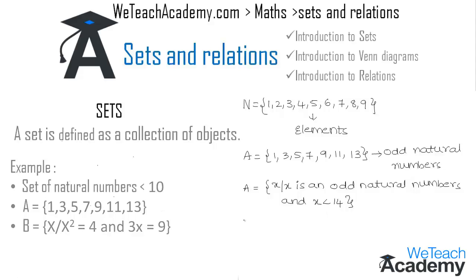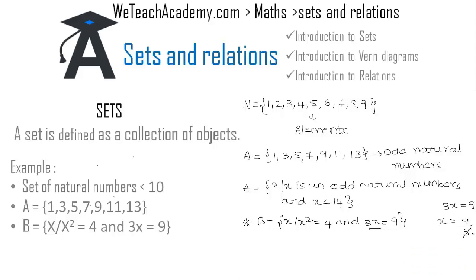Now let us solve the next example: B = {x such that x² = 4} where the given condition is 3x = 9. Finding x from the condition: 3x = 9, so x = 9/3 = 3. Substituting into x² = 4, we get 3² = 9, which is not equal to 4. So we don't get any valid element for x. This gives us an empty set, which we call a null set, represented by the null set symbol.